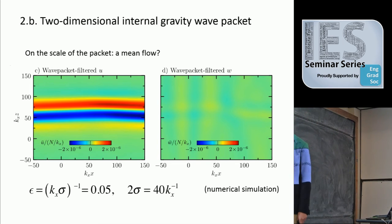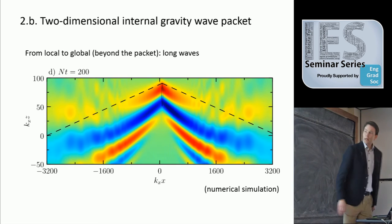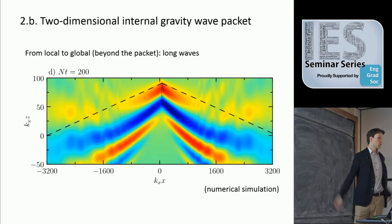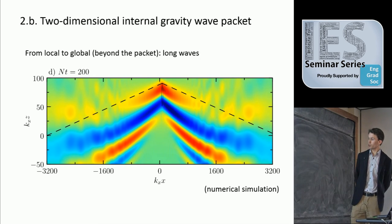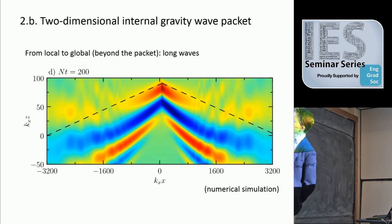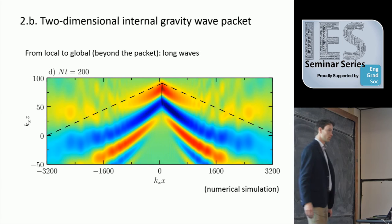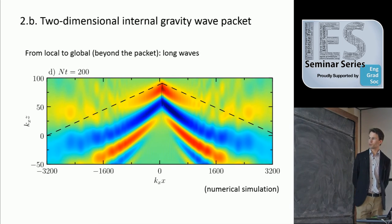As this packet sits here and travels — with right angles between the group and phase velocity — you see it generates mean flows that look like ship waves, and indeed the mathematics of which are those of ship waves.